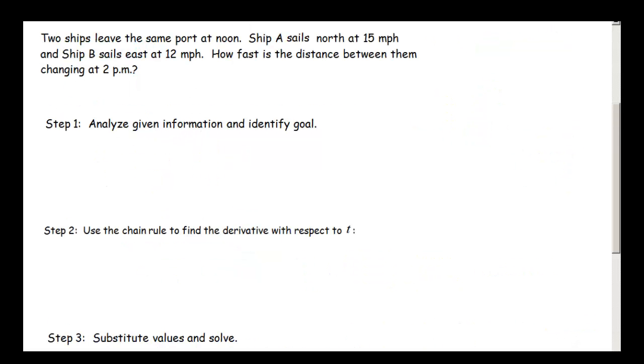So here's a second example. We have two ships that leave the same port at noon. Ship A sails north at 15 mph and ship B sails east at 12 mph. How fast is the distance between them changing at 2 pm? We've got a port here. And ship A is sailing this way. And ship B is sailing this way. The distance between them, let's call that C.